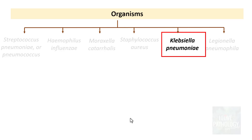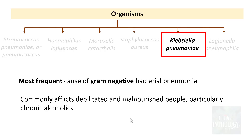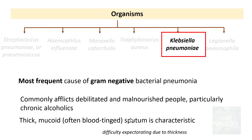Klebsiella pneumoniae is the most frequent cause of gram-negative bacterial pneumonia. It commonly affects debilitated patients, particularly chronic alcoholics. A very characteristic feature of Klebsiella pneumonia is that it produces thick mucoid, often blood-tinged sputum that is difficult to expectorate because of its thickness. Remember: if you have very thick mucoid or blood-tinged sputum, think about Klebsiella pneumonia.